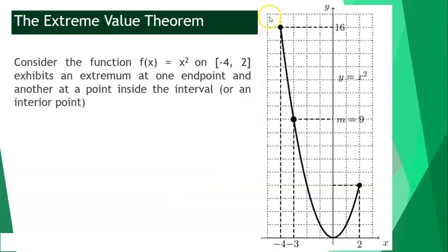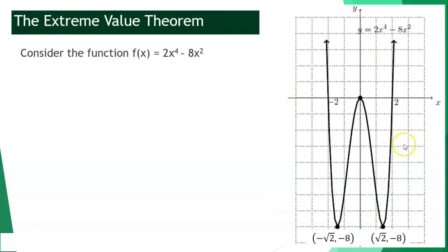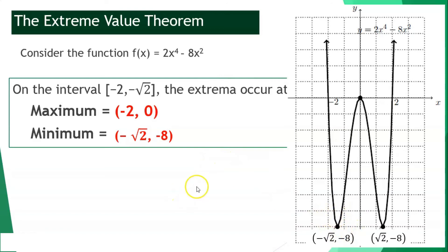Given the graph of x squared from the interval negative 4 until positive 2, the maximum point is located at negative 4, 16, while the minimum point is located at 0, 0. Now for the graph of 2x⁴ minus 8x squared, given the closed interval from negative 2 until negative square root of 2, our maximum point is located at negative 2, 0, and the minimum point is located at negative square root of 2, negative 8.